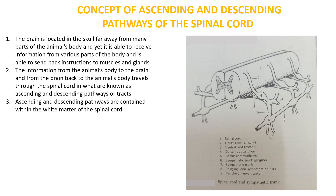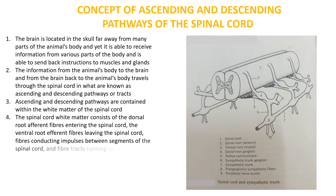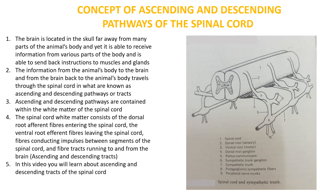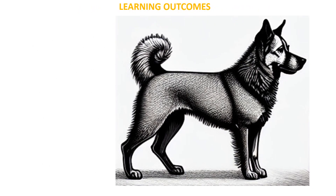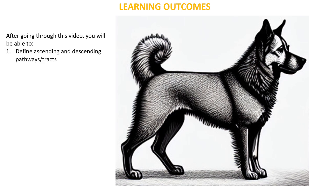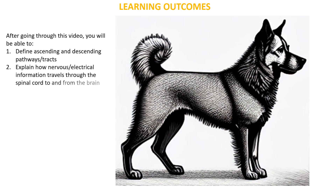In this video you will learn about ascending and descending tracts of the spinal cord. After going through this tutorial, you'll be able to define the ascending and descending pathways or tracts, explain how nervous or electrical information travels through the spinal cord to and from the brain, name some ascending pathways, and name some descending pathways.